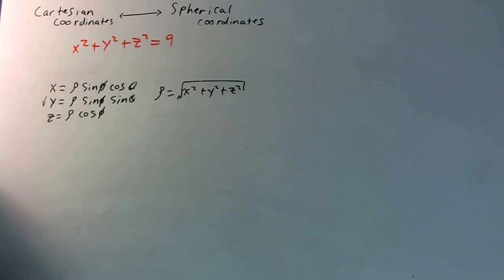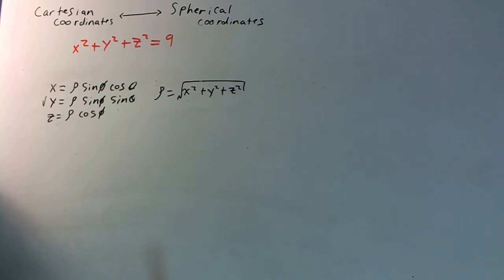Now, consider the equation x squared plus y squared plus z squared is equal to 9. Obviously, this is the equation of a sphere, where h and k are obviously zero in this case.